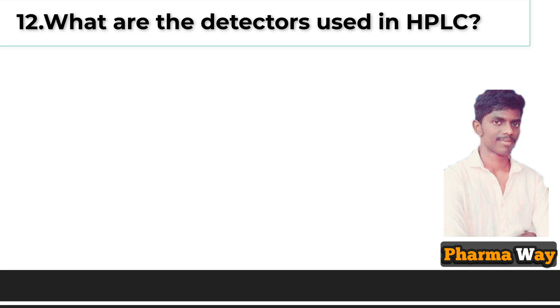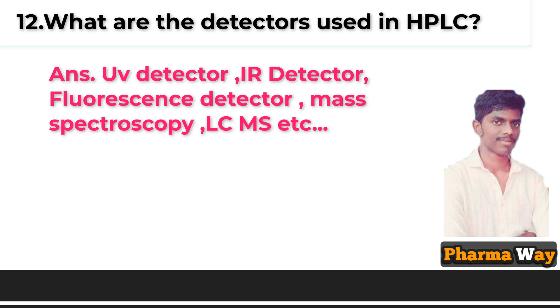What are the detectors used in HPLC? Answer: UV detector, IR detector, fluorescence detector, mass spectroscopy, LC-MS, etc.